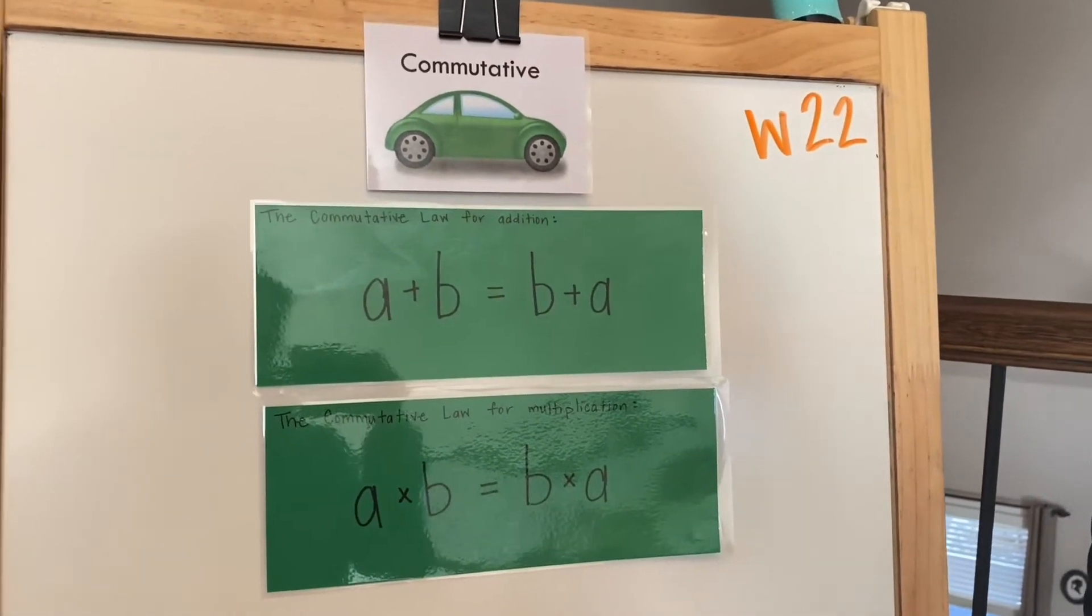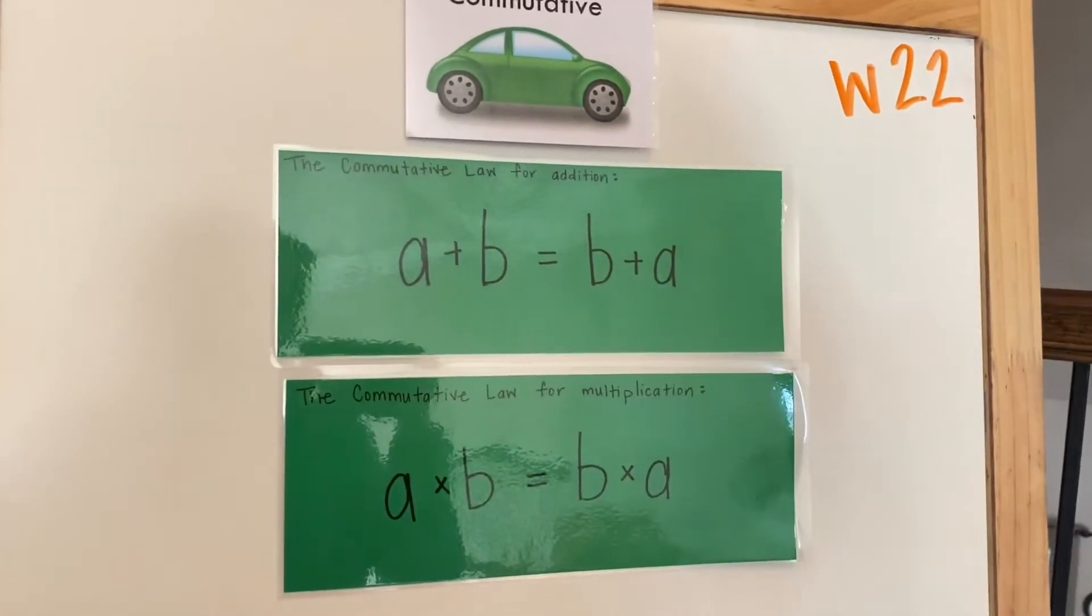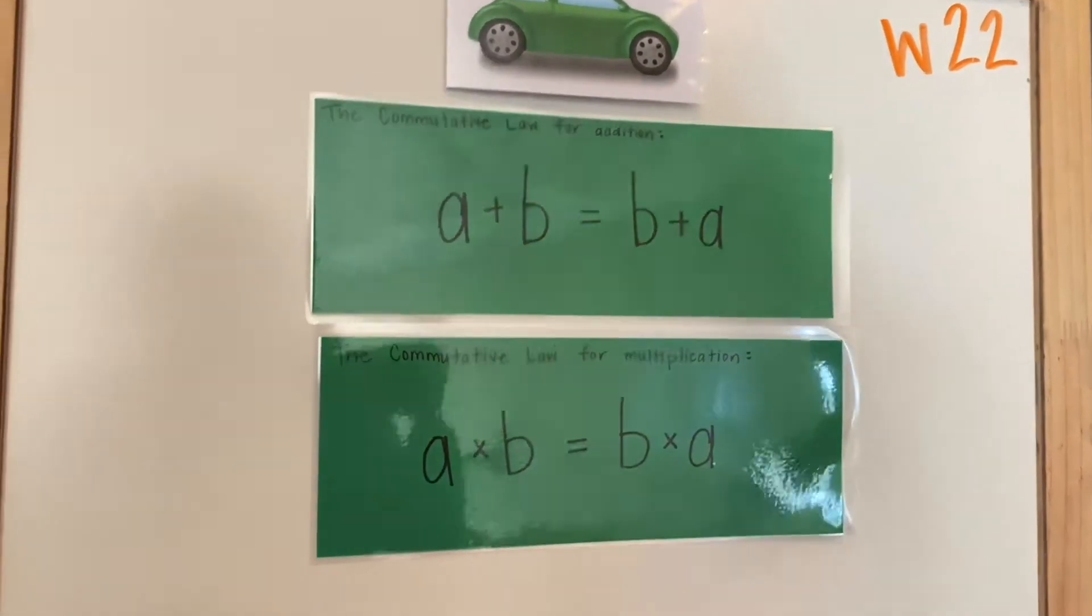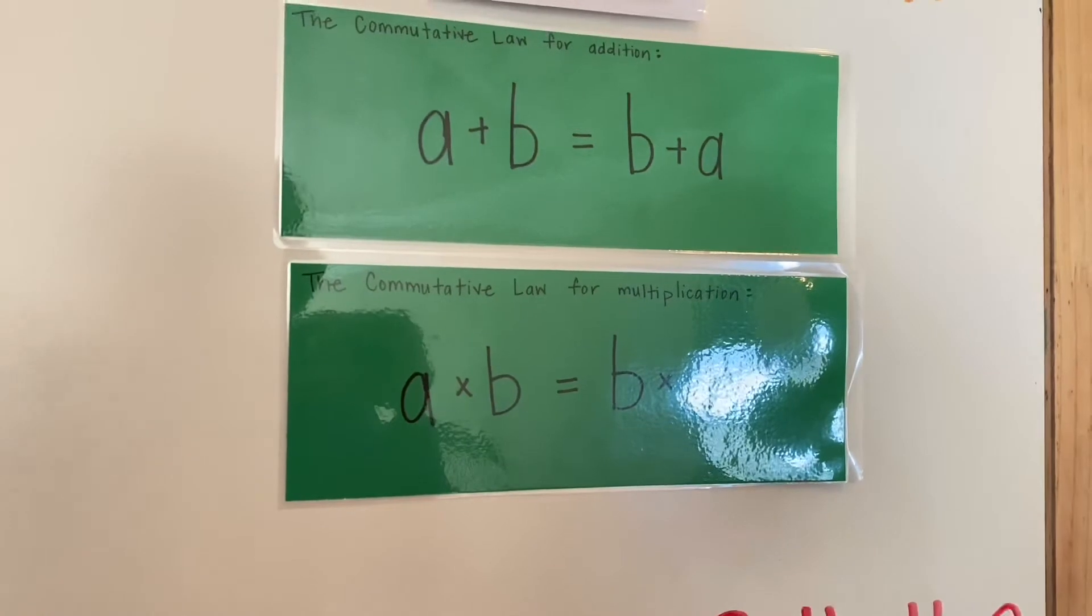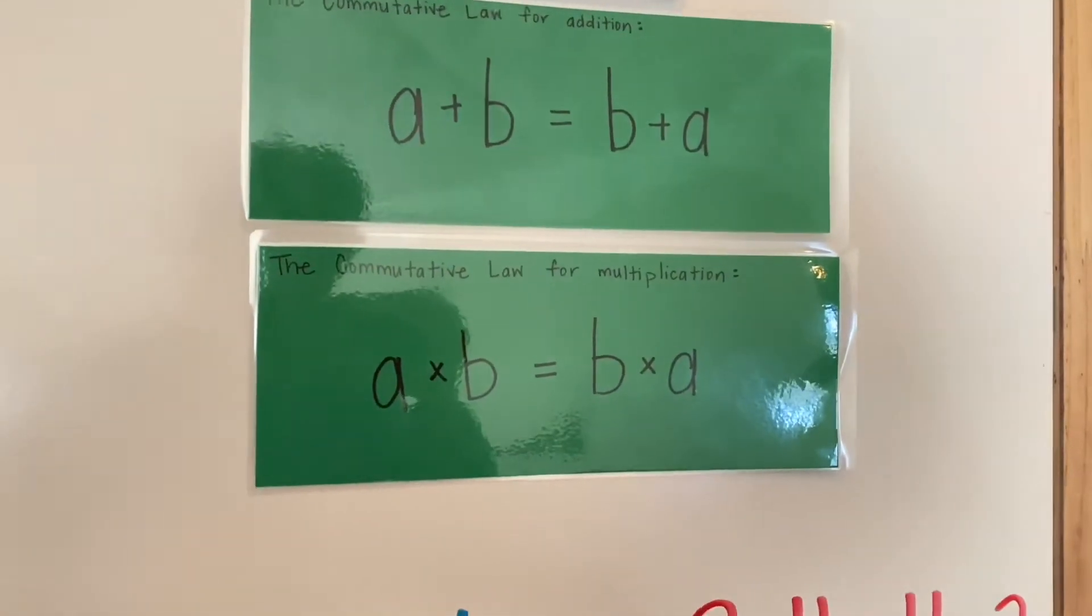The commutative law for addition states that A plus B equals B plus A. The commutative law for multiplication states A times B equals B times A.